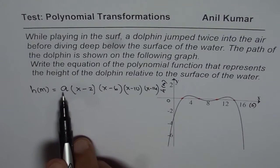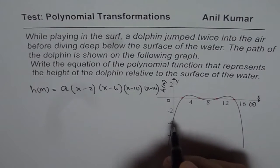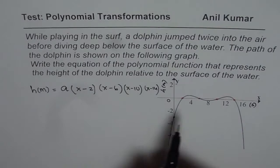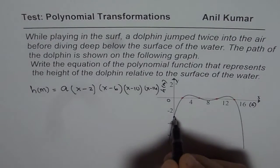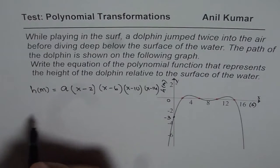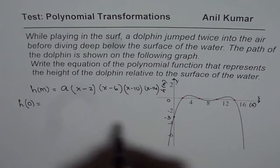So once you write a, then we are talking about not a family, but this particular specific function. To find a, we can use this point, which is y-intercept at minus 3. So we know that h of 0 is equals to minus 3.